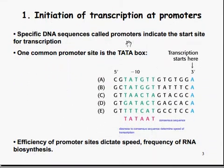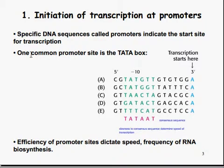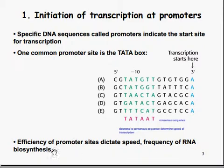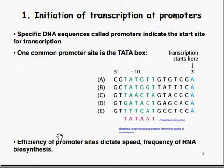The initiation of transcription at promoters. Specific DNA sequences called promoters indicate the start site for transcription. One common promoter site is the TATA box, which is T-A-T-A-T-A-T-A. The efficiency of promoter sites dictates the speed and frequency of RNA biosynthesis — this is the consensus sequence. The closer that the region is to the consensus sequence, the more it determines the speed of transcription.